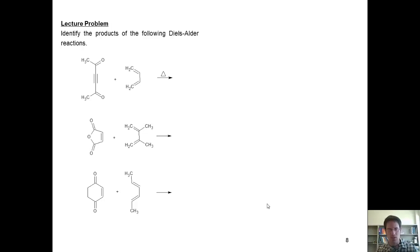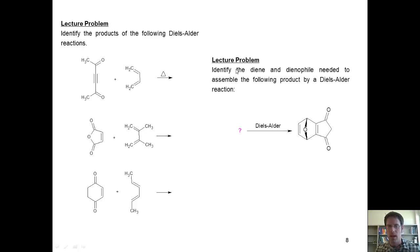So let's get to some problems. Foremost, I want you to identify the products of the following Diels-Alder reactions. And next, I want you to identify the diene and the dienophile that you would need to assemble this Diels-Alder product.